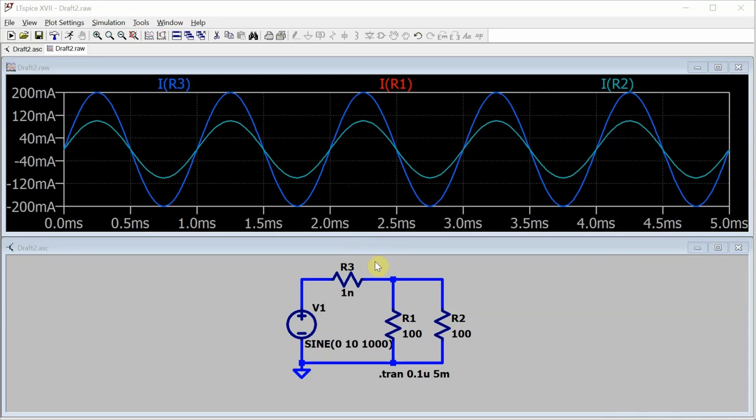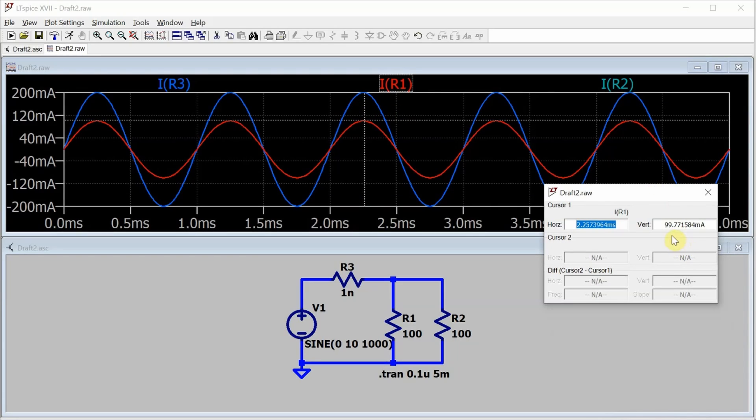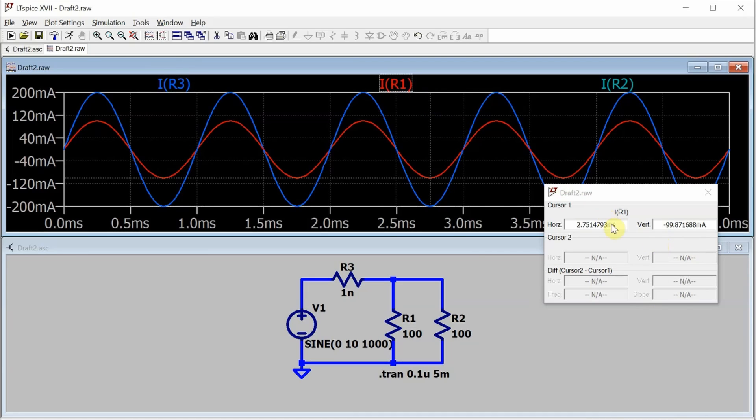And to confirm Kirchhoff's current law, we would need to see that R1 plus R2 is equal to R3. Well, what is the peak value of R1? Let's put a cursor here, take it to the peak, and you can see the value of the peak. It's basically 100 milliamps. For R3, that value is basically 200 milliamps. So R1 peak is 100 milliamps. R2 peak is the same as R1, so also 100 milliamps. 100 milliamps plus 100 milliamps gives me the 200 milliamps of R3. It's going to be the exact same thing at the negative. At the negative, R3 is at minus 200 milliamps. R1 is at minus 100 milliamps. Minus 100 plus minus 100 gives me minus 200 milliamps. So those two peaks, Kirchhoff's current law does still hold true. And you'll find if you pick any point in time on this graph, Kirchhoff's current law is going to hold true.